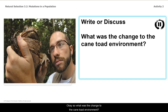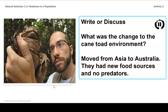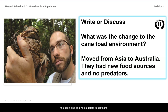So what was the change to the cane toad environment? The change was they moved from their native environment in Asia to Australia. They had many new food sources in the beginning and no predators to eat them.